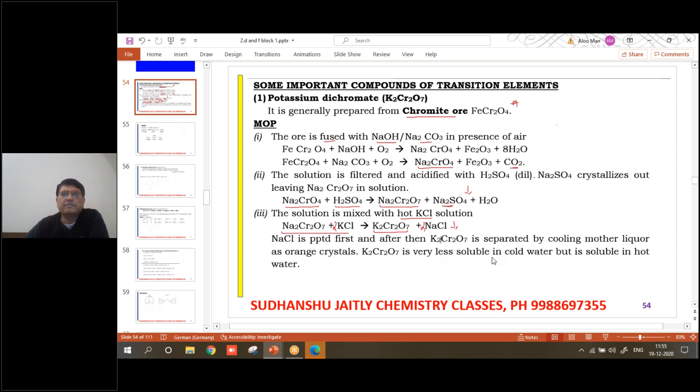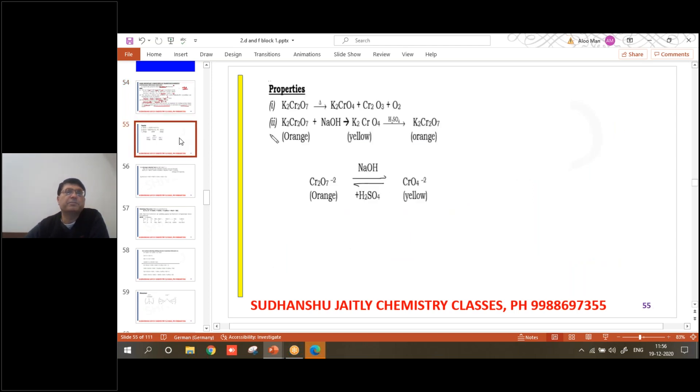The NaCl will precipitate out. After that, the potassium dichromate which will remain soluble - you cool down the temperature. You will get beautiful orange crystals of potassium dichromate. The concept is when the water was warm, the solution was hot, it is soluble. But as you are going to cool it, the potassium dichromate is going to precipitate out. I again reassert the topic is very important.